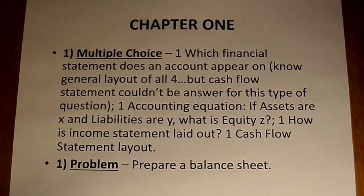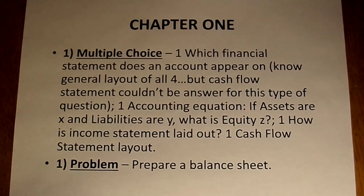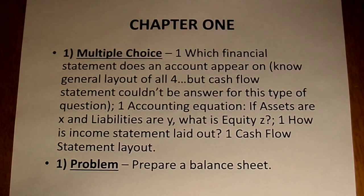One problem will appear on the test from Chapter 1: prepare a balance sheet. In this type of problem, you need to know what goes on the balance sheet. I give you too much — things that go on the balance sheet, but also things that go on the income statement and the statement of stockholders' equity. Figure out which items belong on the balance sheet, and don't use everything — some of it will not belong there.